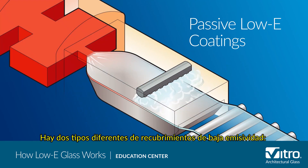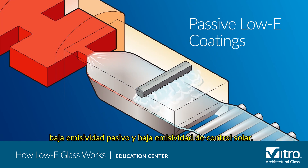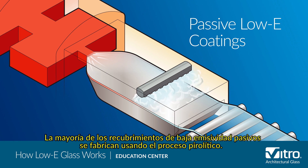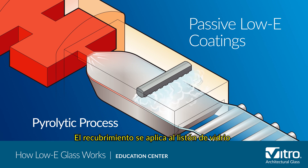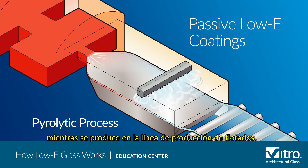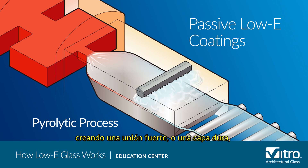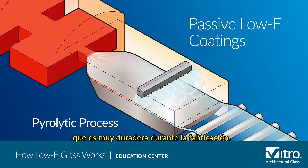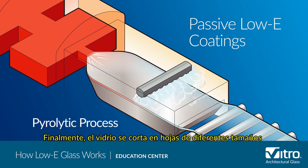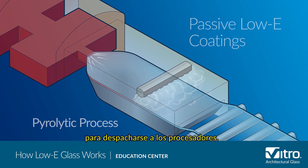There are two different types of low-e coatings: passive low-e and solar control low-e. Most passive low-e coatings are manufactured using the pyrolytic process. The coating is applied to the glass ribbon while it is being produced on the float line. The coating then fuses to the hot glass surface, creating a strong bond or a hard coat that is very durable during fabrication. Finally, the glass is cut into stock sheets of various sizes for shipment to fabricators.